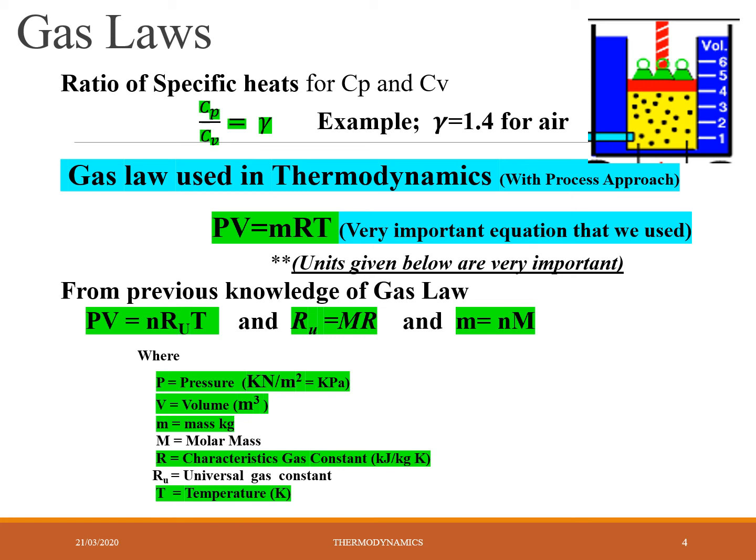The very important equation in thermodynamics: pV = mRT. Here, p is pressure measured in kilopascals, V is volume measured in cubic metres, m is mass measured in kilograms, R is the characteristic gas constant, and T is temperature. R is a very important quantity — the characteristic gas constant is particular to each gas; it depends upon the gas. You may have studied pV = nRuT at advanced level, where Ru is the universal gas constant.